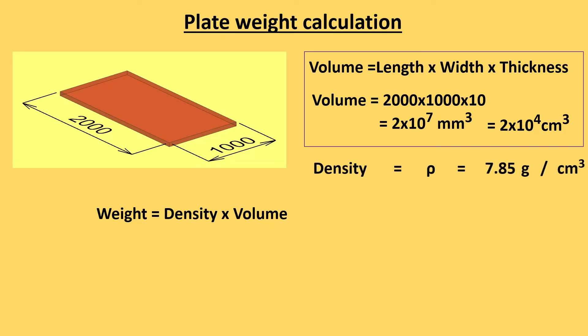As we know we are taking here the MS plate. So density of the MS is 7.85 gram per centimeter cube. If the plate is aluminum then the density value changed. In aluminum case value is 2.7 and if suppose plate is copper then we will consider 8.96 in our calculation.